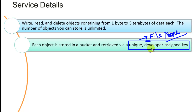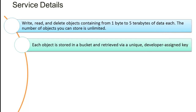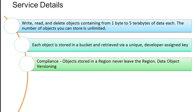Each object is stored in a region and never leaves that region. This is very important from a compliance perspective. Suppose you upload important files to a particular region — if the cloud provider were to copy that file to another region for replication or disaster recovery, it might violate your organization's or country's compliance rules. Amazon makes sure that wherever you upload your data, it remains in that region and never leaves it.